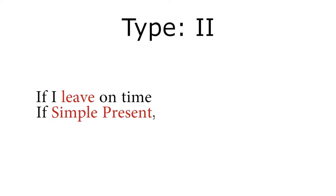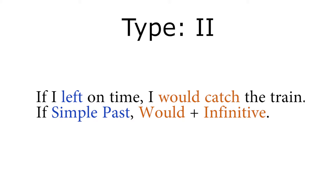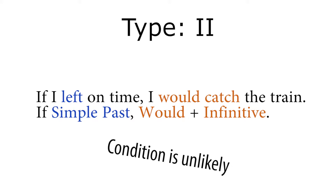Then there's the second type, which is almost the same as the first. But instead of the simple present, you use the simple past: 'if I left on time.' And on the other side, 'will' changes to 'would.' So: 'If I left on time, I would catch the train.' This implies I'm probably not going to leave on time, so I'm probably not going to catch the train — that's what this phrase expresses.